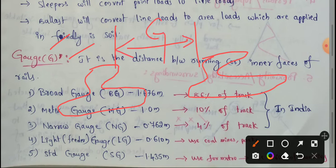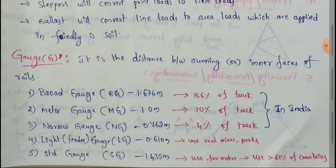It is the distance between the inner faces of rails. This gauge has different types available. We will discuss them one by one.